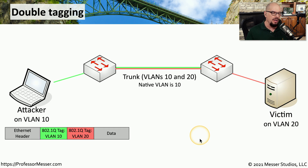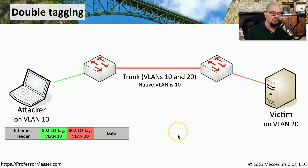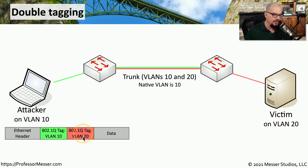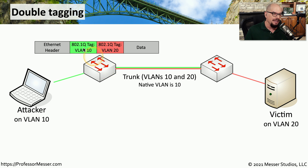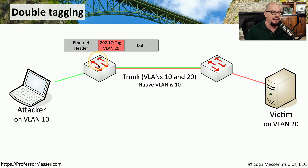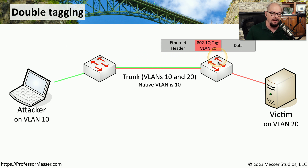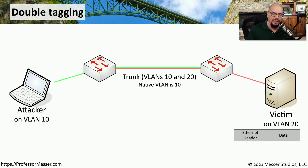Let's visually see how this double tagging process works. We'll start with an attacker on VLAN 10 that wants to send information to a victim on VLAN 20. In between both is a trunk for both VLAN 10 and VLAN 20, and the native VLAN is VLAN 10. The attacker creates a specially crafted frame with an ethernet header and data, but instead of a single tag, there are two separate 802.1Q tags — one for VLAN 10 and one for VLAN 20. That frame is sent to the first switch where the native VLAN is 10, so the VLAN 10 tag is removed, leaving only the VLAN 20 tag. That frame is forwarded to the next switch, which identifies the VLAN 20 tag, removes it, and places the data onto VLAN 20 where it reaches the victim.